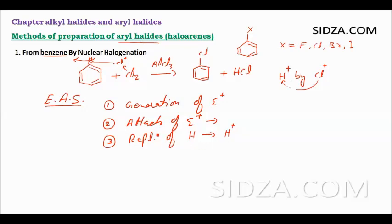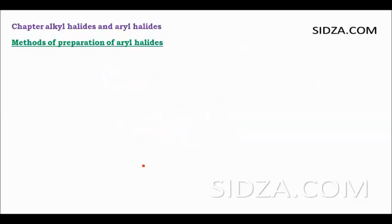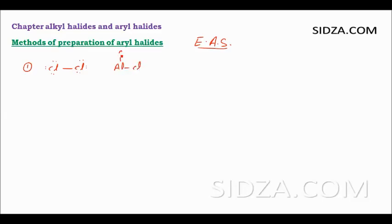Let's see the mechanism of this reaction. How do we generate Cl+ from the chlorine molecule? In any EAS reaction, the first step is the generation of the electrophile. For chlorination, the electrophile is generated from the Cl2 molecule. There is a Cl–Cl single bond, and every chlorine atom has a lone pair of electrons.